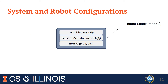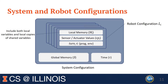Now we discuss the formal semantics for the CORD program. First, we discuss the configuration of the system. A CORD program will have local variables, local memories, sensor and actuator ports as controller ports, and an additional field called 'term' that indicates whether the robot is executing statements inside events or following dynamics. This is a robot configuration for one particular robot; the CORD program actually runs on multiple robots, so the system configuration consists of the robot configurations of all robots.